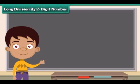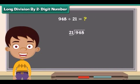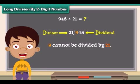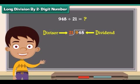Long division by 2 digit number. Let us now learn to divide 948 by 2 digit number 21. The number 948 is the dividend and 21 is the divisor. 9 cannot be divided by 21. So look at the first 2 numbers from the left in the dividend.